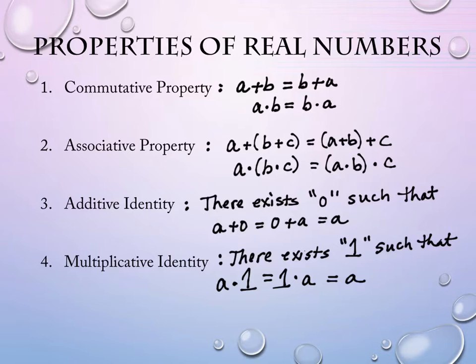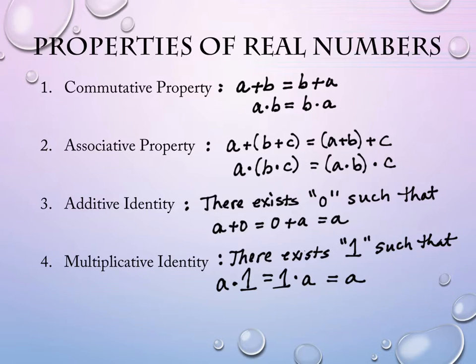We've been using the multiplicative identity recently, we just didn't identify it quite that way. Every time in fractions, when you were finding a common denominator and you multiplied the top and bottom by the same value — like two over two — two over two is one. You were really multiplying that fraction by one. We used the multiplicative identity last class period quite frequently.